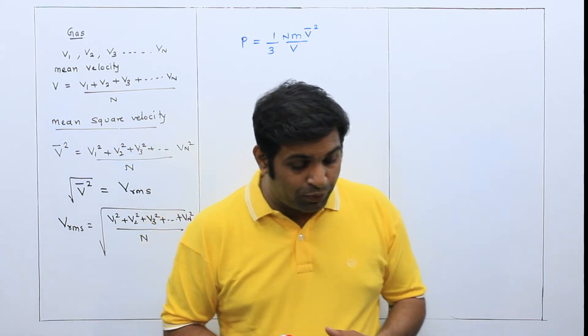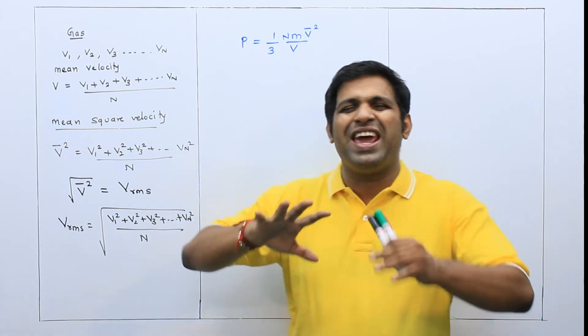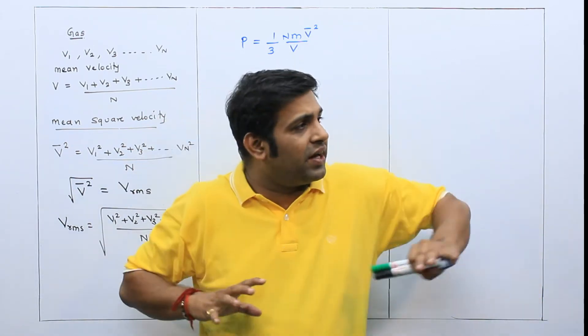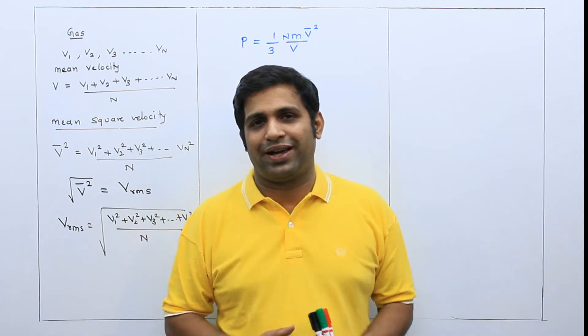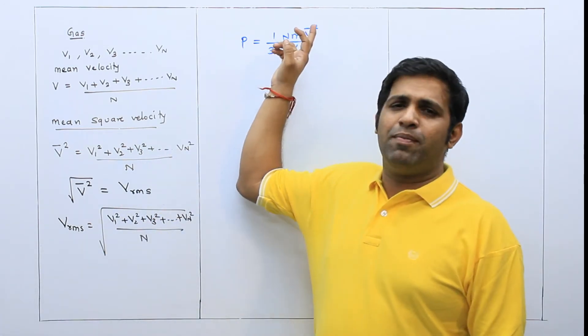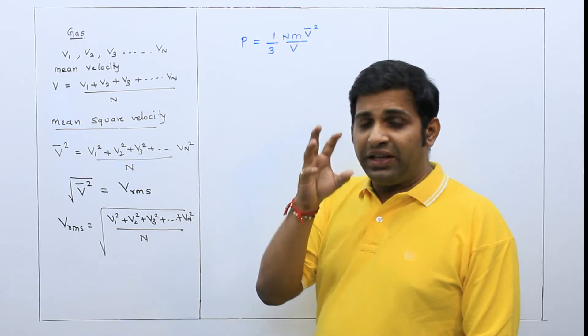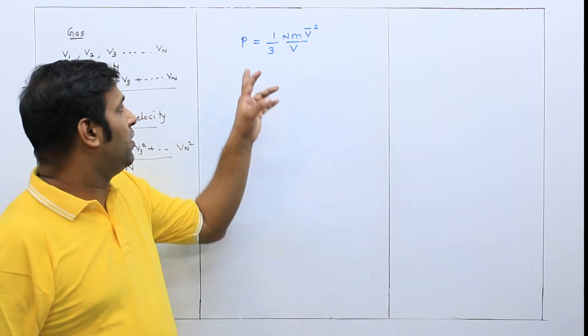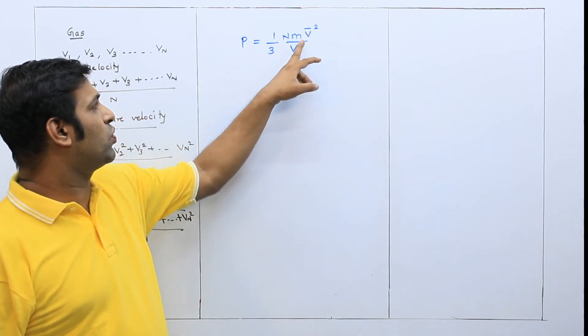Now kids, understand this thing. When I say that I have gas in a container, what will the gas do? It will put pressure on all the walls. How much pressure? 1 by 3 nm v bar square upon V. We have proved it. 1 by 3 nm v bar square upon V.